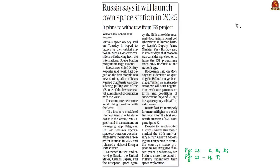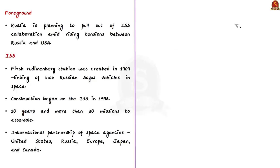According to recent reports, Russia is planning to pull out of ISS collaboration amid rising tensions between Russia and the USA, and plans to build its own space station by 2025. The idea of a space station was once science fiction until it became clear in the 1940s that construction might be attainable. The first rudimentary station was created in 1969 by linking two Russian Soyuz vehicles in space, followed by further developments until construction began on the ISS in 1998.